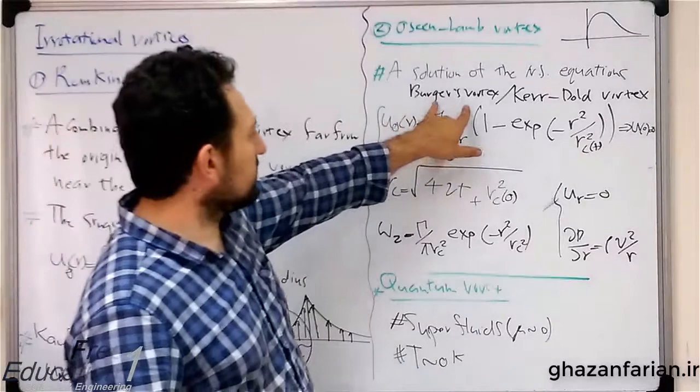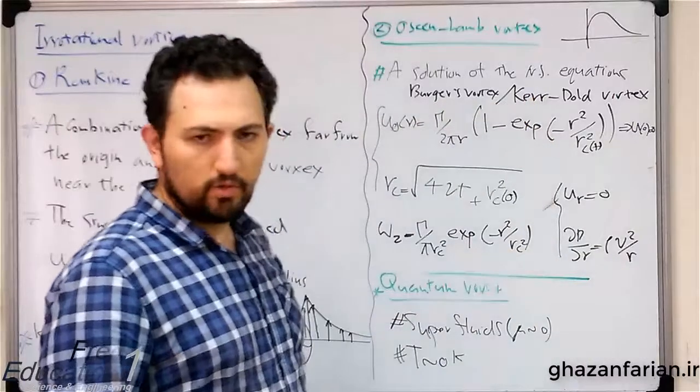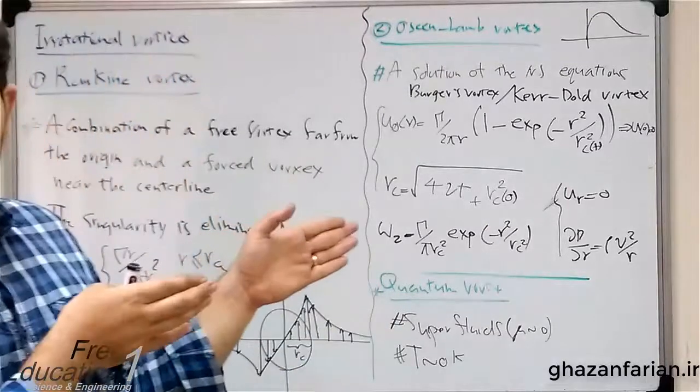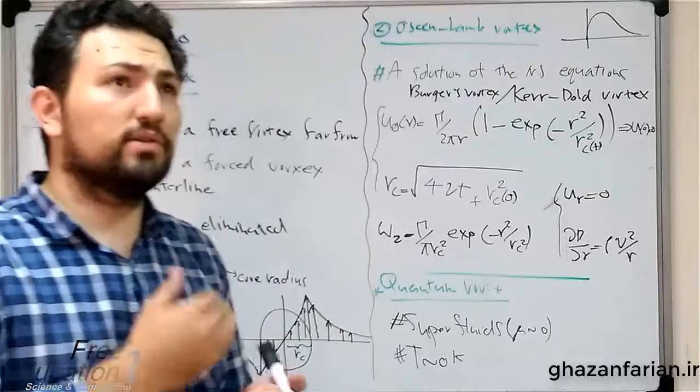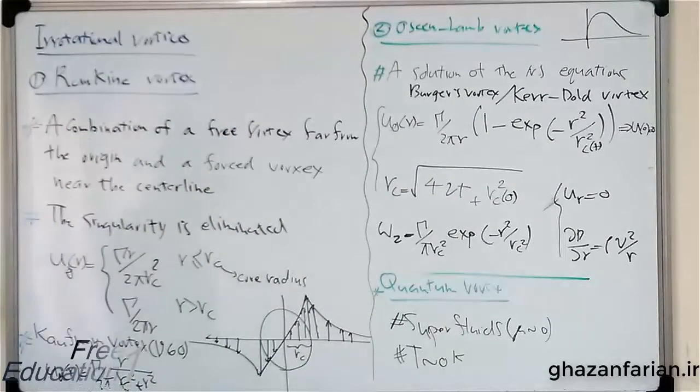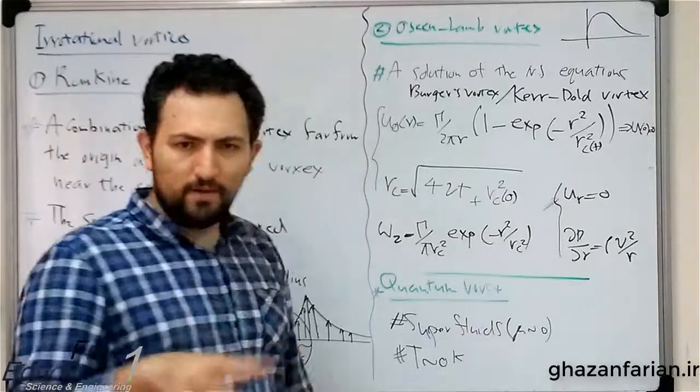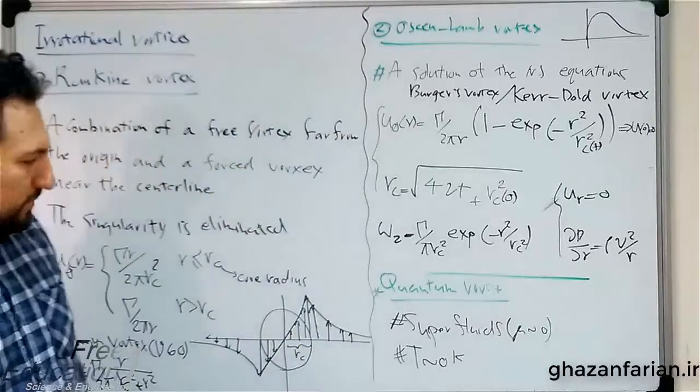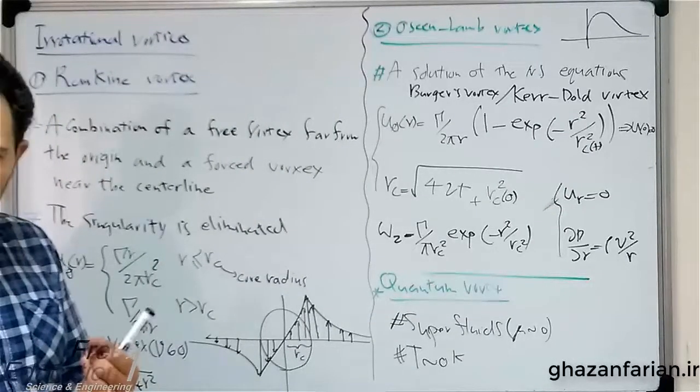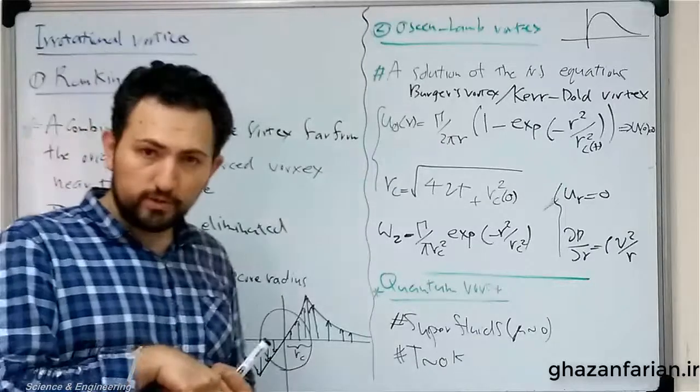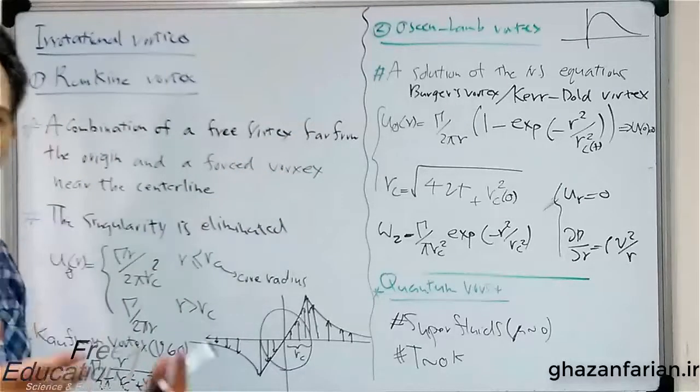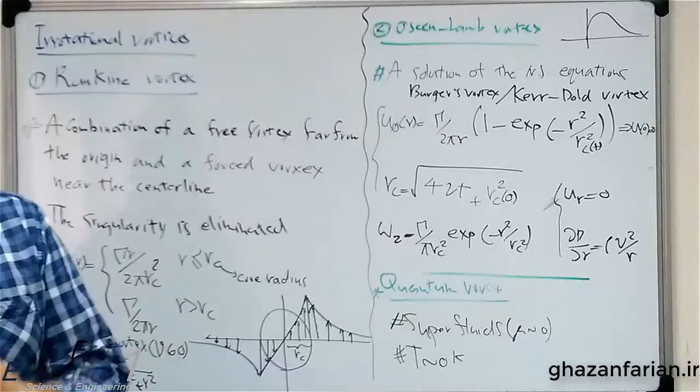You can Google these keywords, Burgers vortex or Kerr-Dolt vortex, to find other details or the velocity distribution corresponding to these vortices and the procedure of deriving these vortices after solving the Navier-Stokes equation. Let's ignore other details. The third type of vortices: the first one was free vortex, the second was forced vortex, and these are permutations of forced and free vortices.